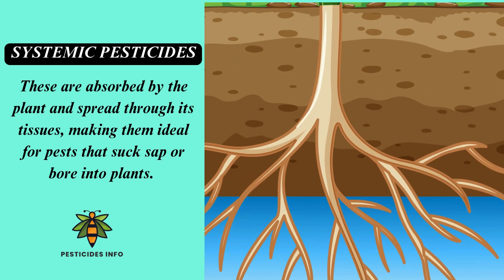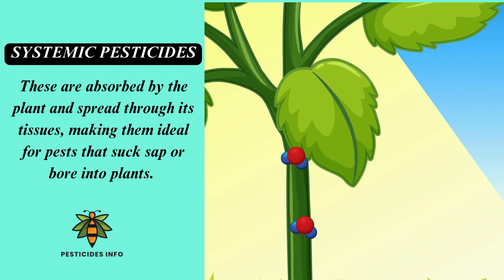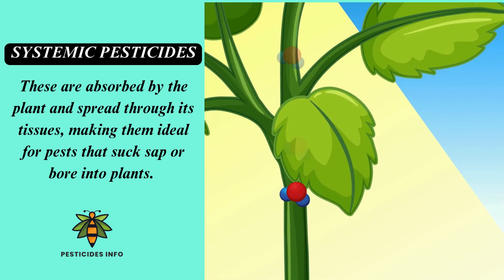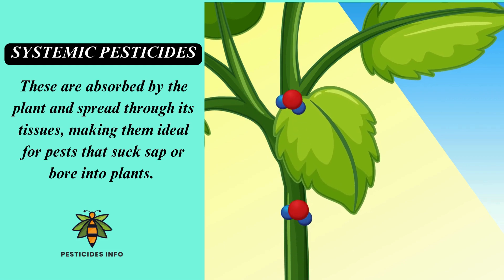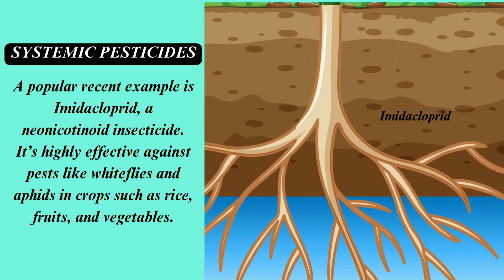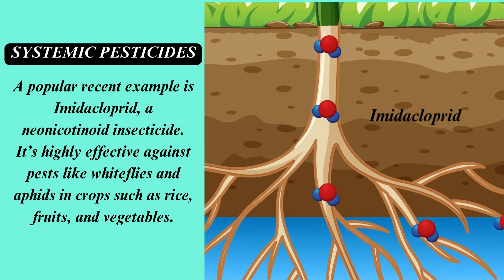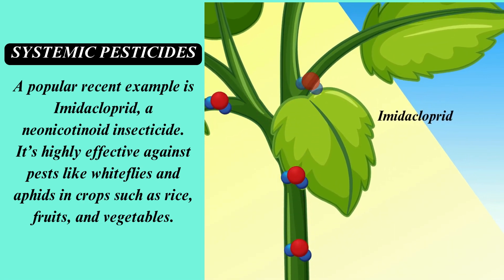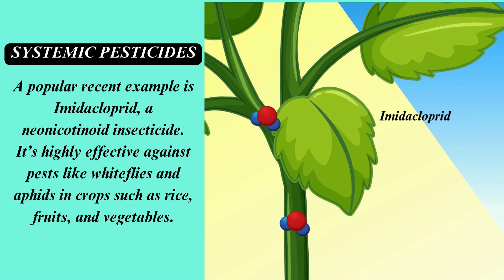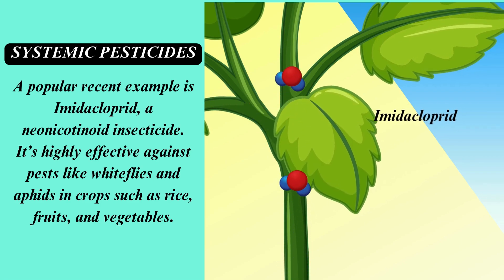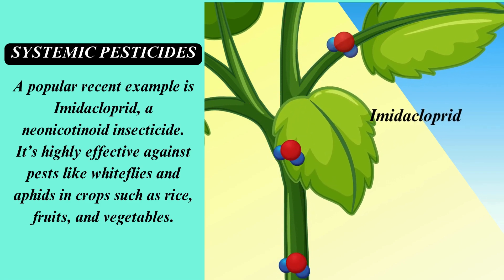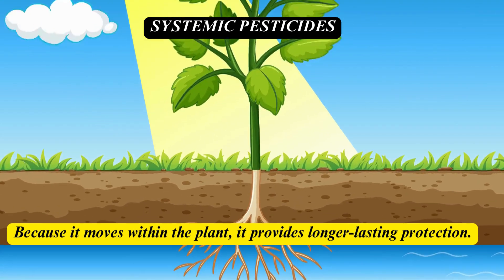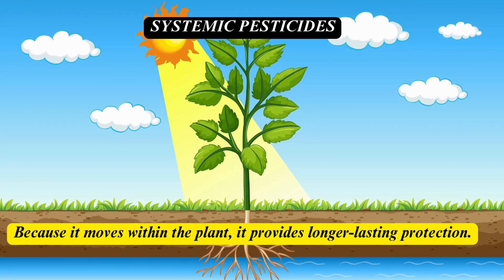Next up are systemic pesticides. These are absorbed by the plant and spread through its tissues, making them ideal for pests that suck sap or bore into plants. A popular recent example is imidacloprid, a neonicotinoid insecticide. It's highly effective against pests like whiteflies and aphids in crops such as rice, fruits, and vegetables. Because it moves within the plant, it provides longer-lasting protection.